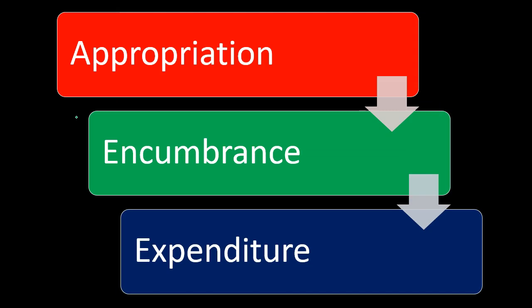Then we have the actual expenditure — that's when the normal triggering process happens, similar to accrual or cash basis. A financial transaction has occurred, and we recognize the expenditure on the modified accrual basis. At that point we also have to reverse the encumbrance, because the encumbrance was just a holding account until we could record the expenditure. You can't have both on the books relating to the same item, so we reverse and remove the encumbrance once the related expenditures have been incurred and recorded.